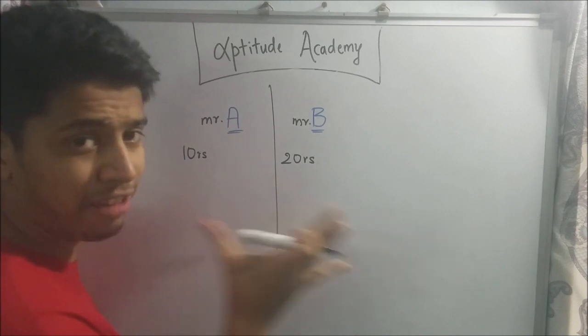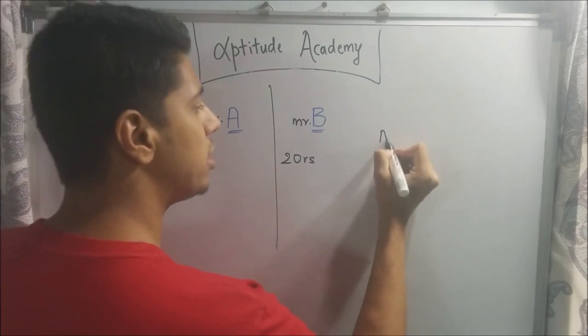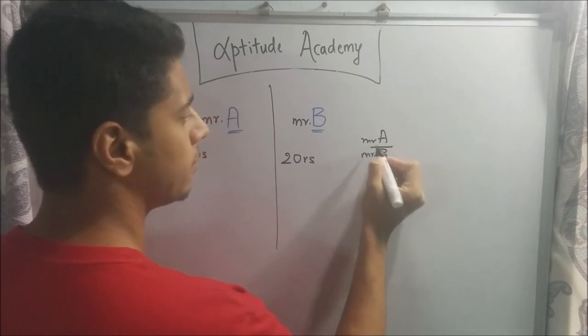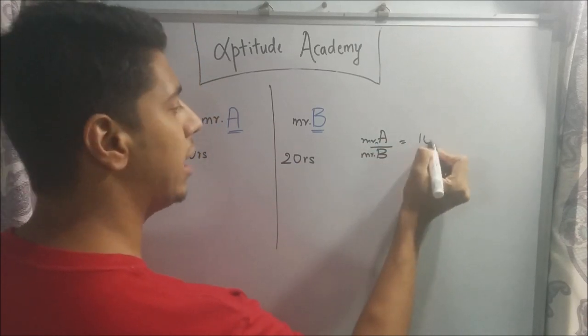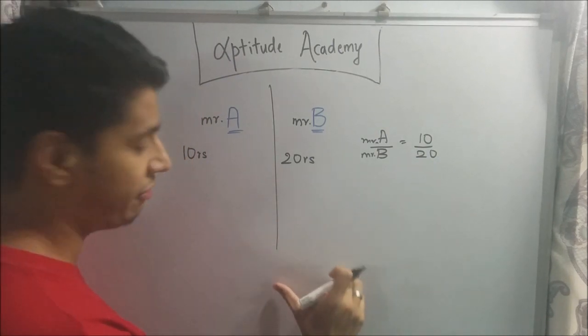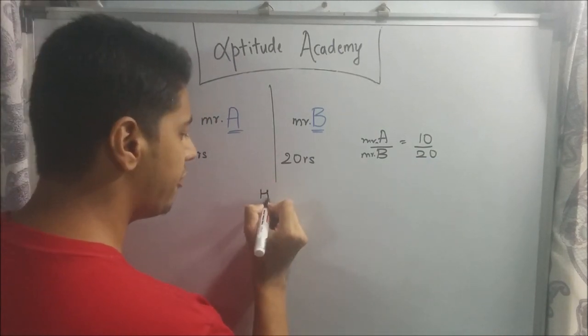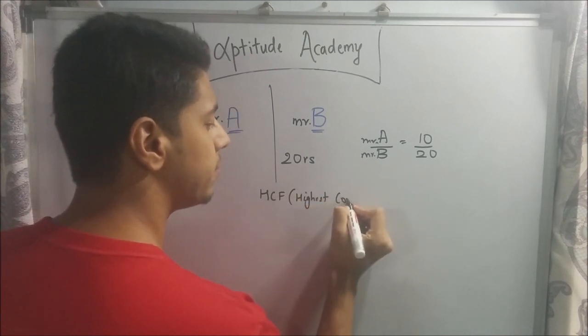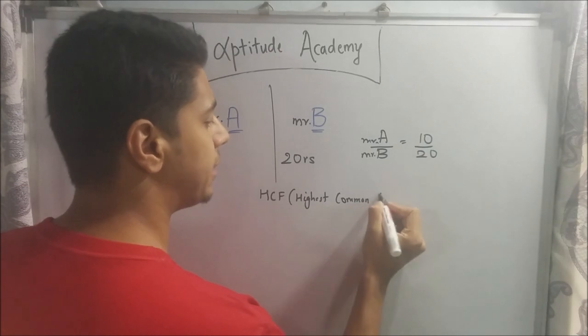Ratio is basically a fraction. So you're basically saying, what is Mr. A by Mr. B? So here you will get 10 by 20. Now, it is also related to the HCF. HCF is your highest common factor.